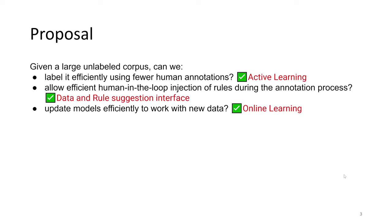The answer to all these questions is yes, and we suggest the following approaches to address each of the issues. To support efficient labeling, we use active learning. For efficient human-in-the-loop injection of rules, we use a data and rule suggestion interface. And for model updates, we use online learning.